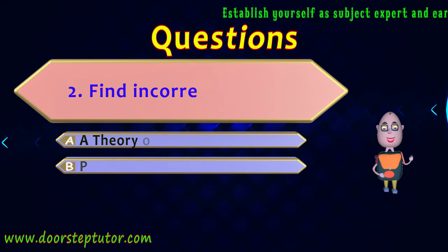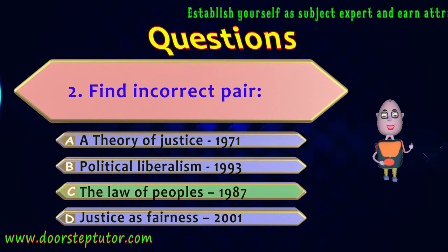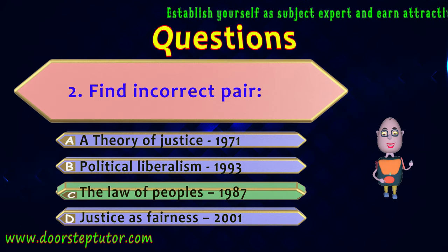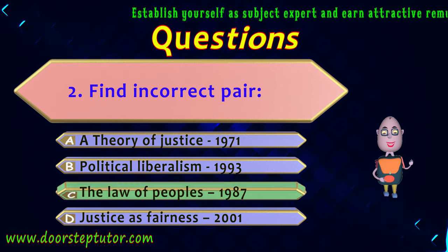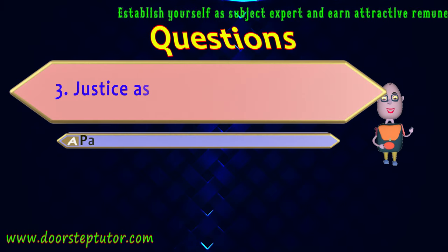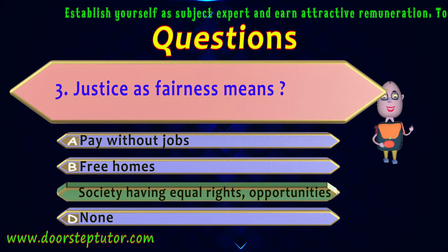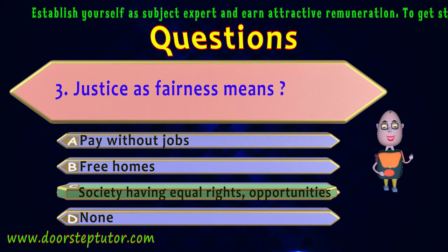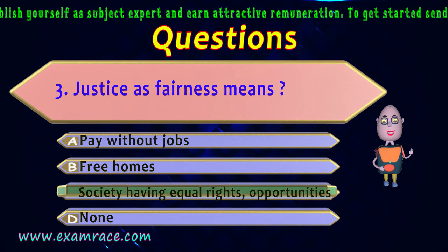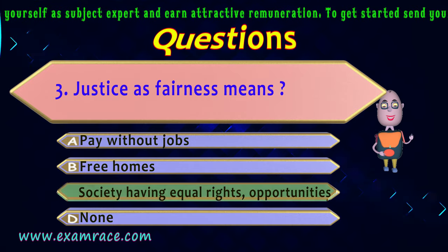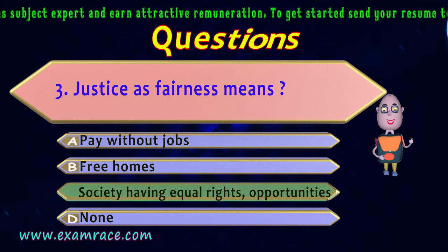The second question asks to find the incorrect pair. All options apart from C are correct. C stands as the incorrect pair, as the year mentioned was not 1987 — it was actually 1999. The third question: justice as fairness means — the answer is C. Justice as fairness envisions a society of free citizens holding equal basic rights, enjoying equal opportunities of advancement, and cooperating to achieve a common goal. So C is the correct answer.